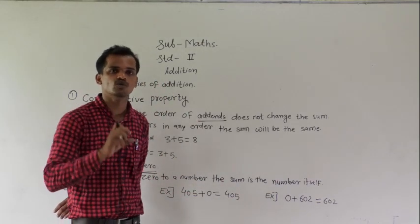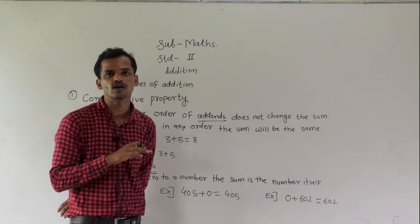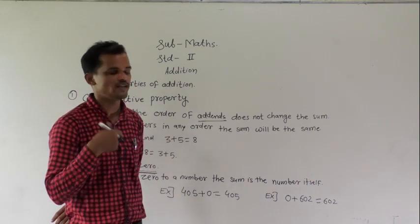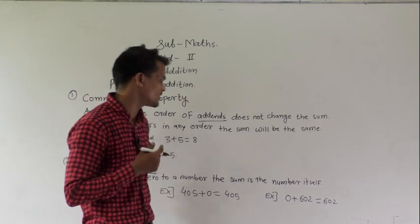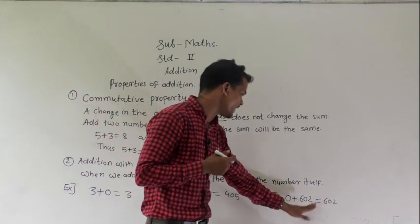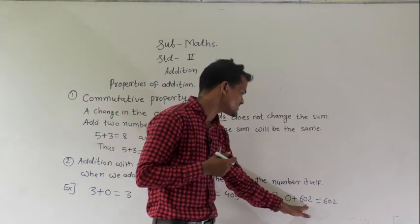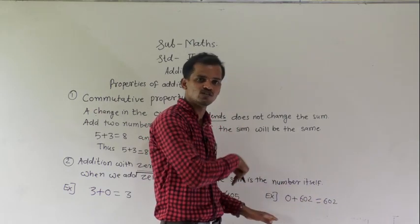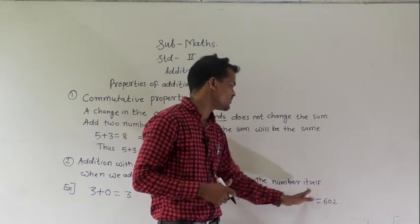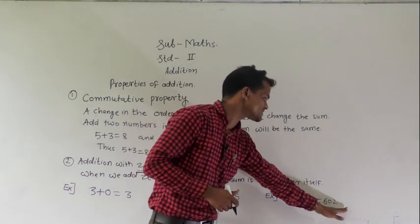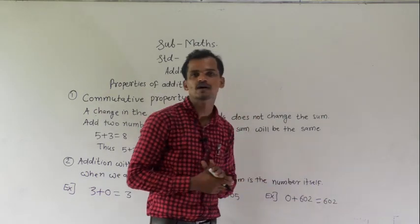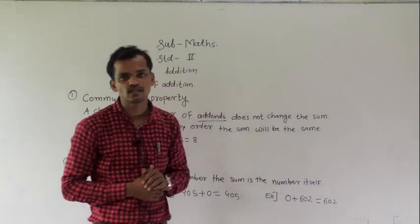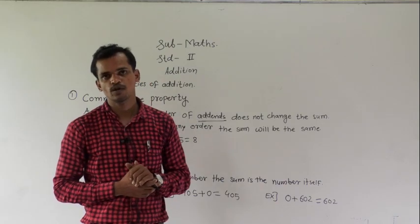If we add 0 to any number, we get that same number. For example, 602 plus 0 — we will get 602 as the sum.